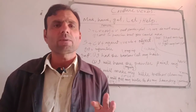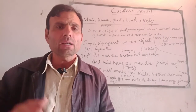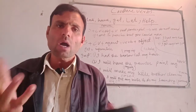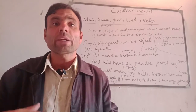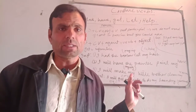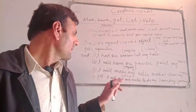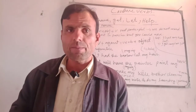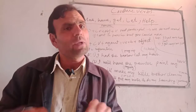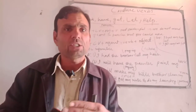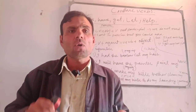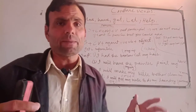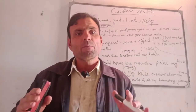Now I will explain in Urdu to make things clearer. The important causative verbs are have, get, and make. If someone is equal to you, you persuade him — you are 'getting' him. For example: 'I will get my sister to do my laundry' — your sister is equal to you but she is nice, so you persuade her and she agrees to help you.